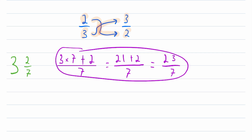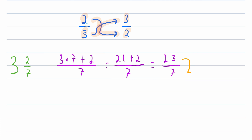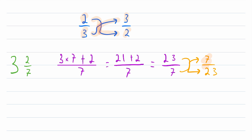Then of course we just have to add 21 and 2. That makes 23 over 7. So this is just converting the mixed number into an improper fraction. Then we just take the usual steps to find the reciprocal — flip the numerator and denominator. So instead of 23 over 7, we have 7 over 23. And that's it. That is the reciprocal of 3 and 2 sevenths.